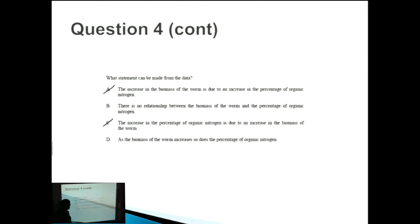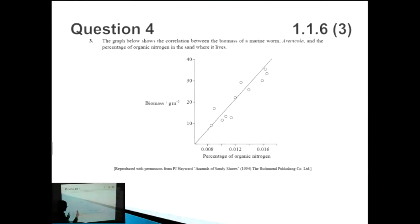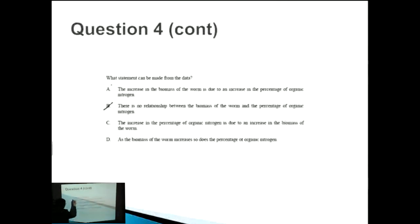How about B? There's no relationship between the biomass of the worm and the percentage of organic nitrogen. Moving back, that's completely false. We can see that there's a massive increase in biomass as the nitrogen increases. So therefore, B is also wrong. How about D? As the biomass of the worm increases, so does the percentage of organic nitrogen. Yeah, this sounds very good. It's one of those answers that sits on the fence. There's no suggestion that one causes the other. And this is the correct answer.